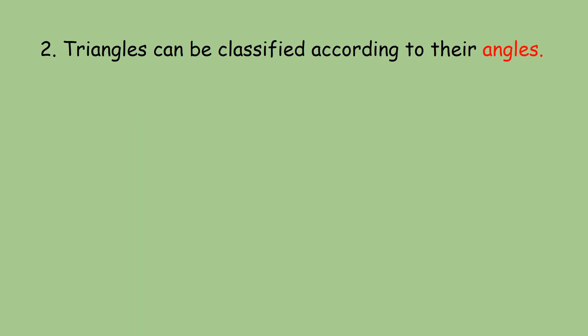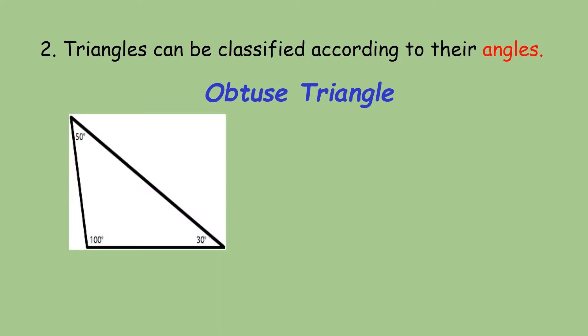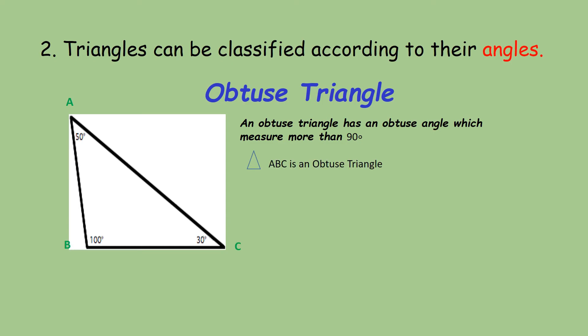The third classification of triangles according to their angles is the obtuse triangle. We can say that this picture is an obtuse triangle because it has an obtuse angle which measures more than 90 degrees. Therefore, triangle A, B, C is an example of an obtuse triangle.